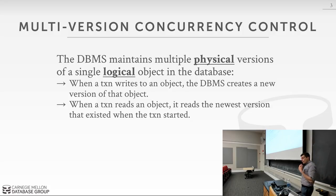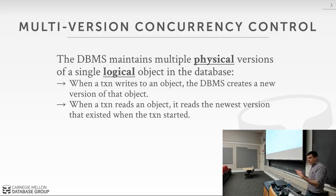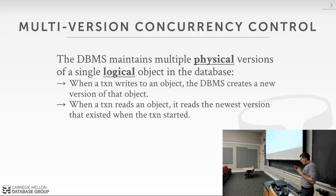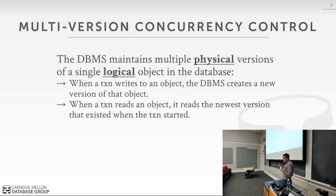When a transaction writes to or updates an object, we create a new physical version. When we read an object, we have to figure out which physical version is the visible representation of that logical object to our transaction. Your transaction can be running, my transaction can be running, and what is visible to me versus you can be completely different.